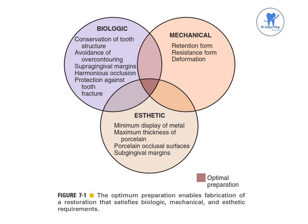Biologic considerations affect the health of oral tissues: conservation of tooth structure, avoidance of over-contouring, supragingival margins, harmonious occlusion, and protection against tooth fracture. Mechanical considerations affect the integrity and durability of the restoration: retention form, resistance form, and deformation. Aesthetic considerations include minimum display of metal, maximum thickness of porcelain, porcelain occlusal surfaces, and subgingival margins.